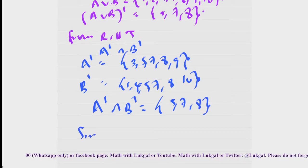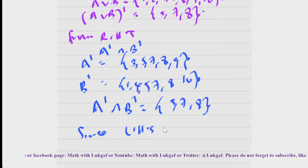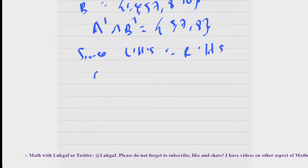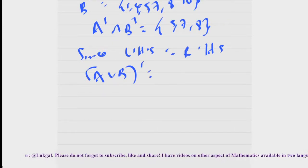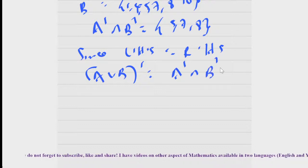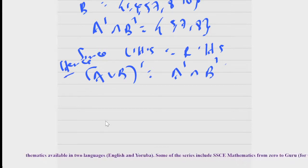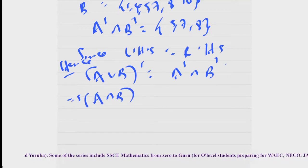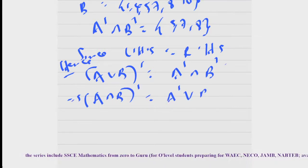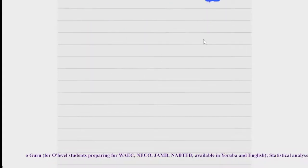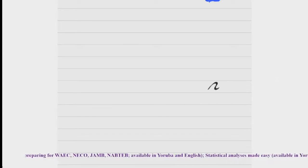Can you see? Since the left-hand side equals the right-hand side, your A union B complement is equal to A complement intersection B complement. That proves De Morgan's theorem. The second version of De Morgan's theorem states that A intersection B complement equals A complement union B complement.